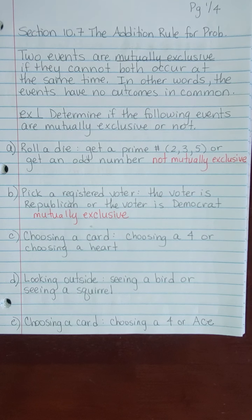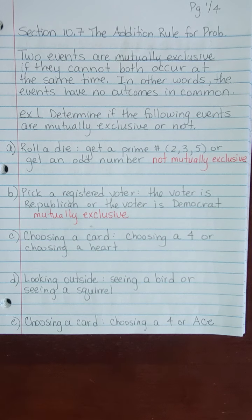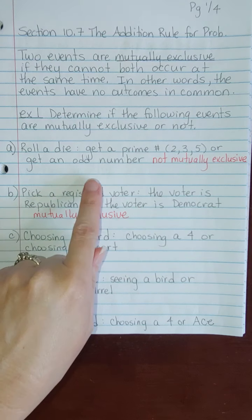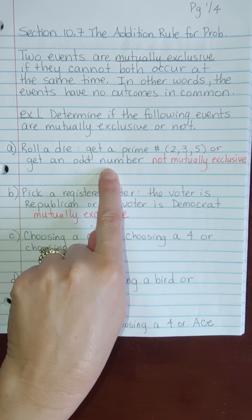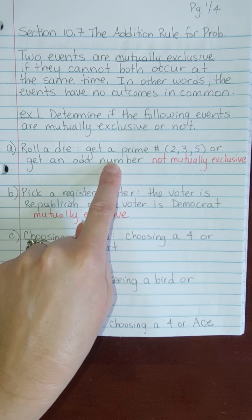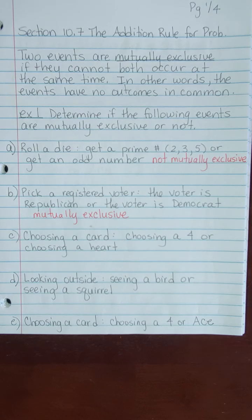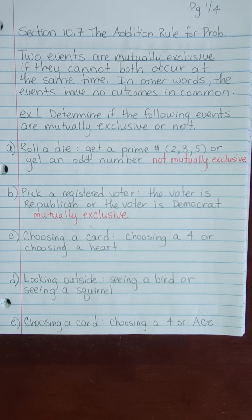Pause the video and see if you can finish out the last three — label those as either mutually exclusive or not. Think about the word exclusive: if you're dating someone exclusively, it means you're not dating anybody else. So if you're talking about getting a prime number and getting an odd number, they're both seeing three and five — they're not exclusive. Mutually exclusive means nothing in common.